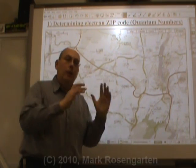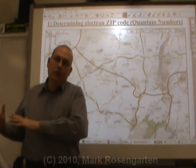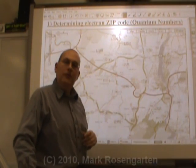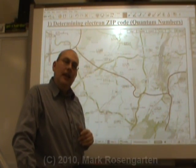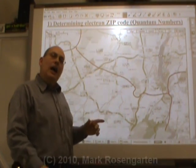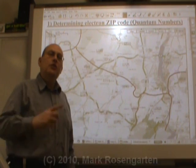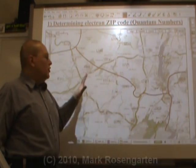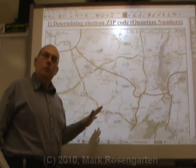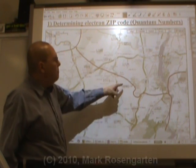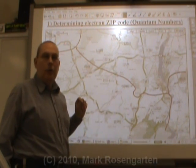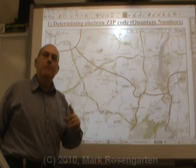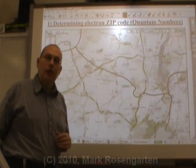As you go from east to west across the country, did you know that the first number of the zip code increases? So that by the time you get out to California, your zip codes begin with a 9. Just in the same way a zip code can be used to pinpoint a town, quantum numbers can be used to pinpoint the location of an electron.